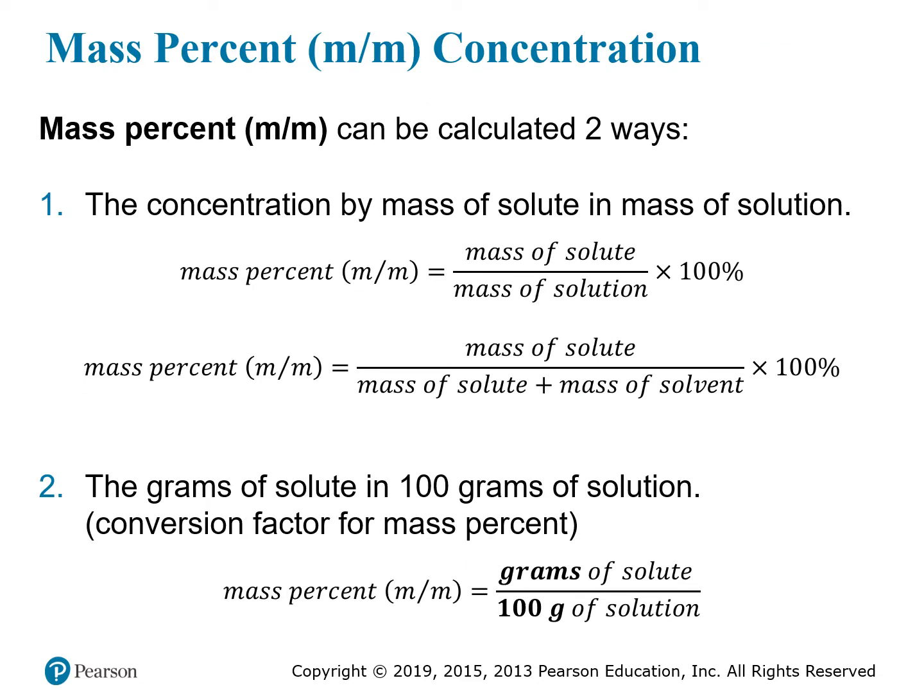Since there are many different ways to measure the amounts for both solute and solution, there are several different concentration units. The first one is the mass percent, m/m. If you see a bottle labeled with a percent concentration and it says m over m next to it, this refers to the mass percent.